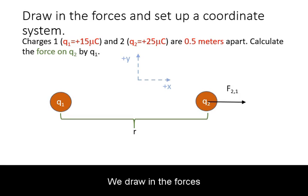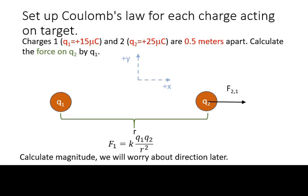We draw in the forces on the target charge and set up the coordinate system. We need to set up Coulomb's Law for each charge acting on the target. In this case, there is only one force on charge 2 by charge 1. We will now abbreviate this as just force 1.